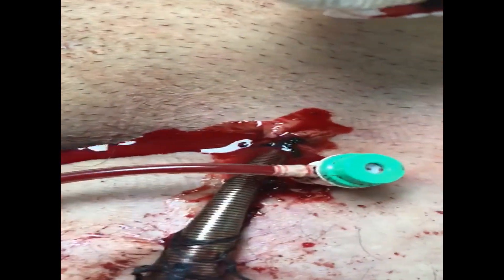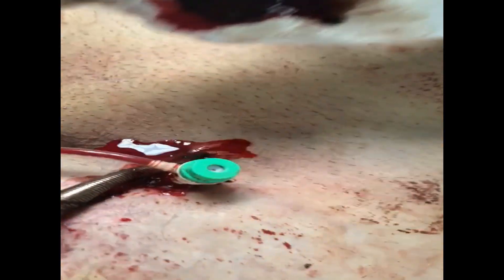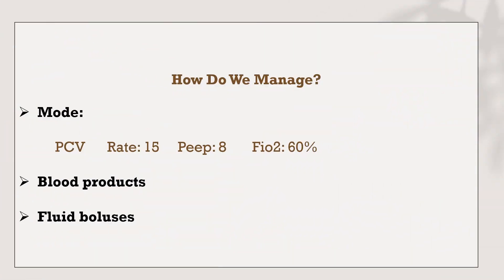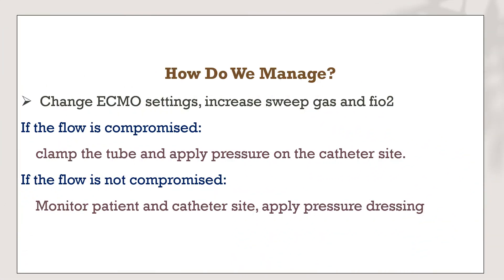Management steps: first, change the ventilation mode from pressure support to pressure control. Give blood products — packed red blood cells — to compensate for the bleeding, and give fluid boluses to support the severely dropping blood pressure. Then adjust ECMO settings and address the cannula site. Increase sweep gas and FiO2. If flow is compromised, clamp the tube and apply pressure on the cannula site. If flow is not compromised, monitor the patient and apply pressure dressing on the bleeding site.